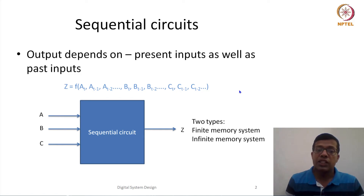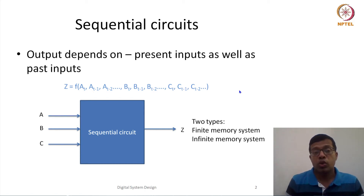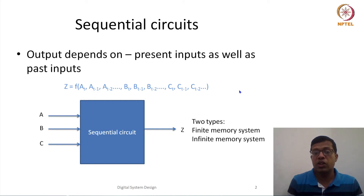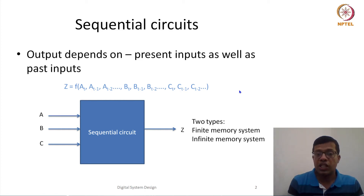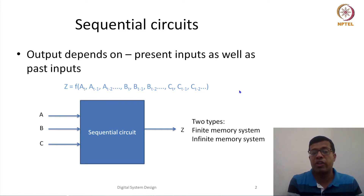Based on that, the sequential system can be of two different types: finite memory and infinite memory. Finite memory means we store only a certain number of previous inputs. Infinite memory means the output depends on all previous inputs — every input from the very first to the current. If it depends only on a finite number of previous inputs, it is a finite memory system.